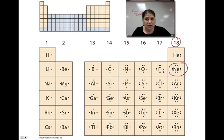All of these ones have seven, so they want to get one more. They're going to gain an electron to become like the noble gas that's next to them. Oxygen will need to gain two.